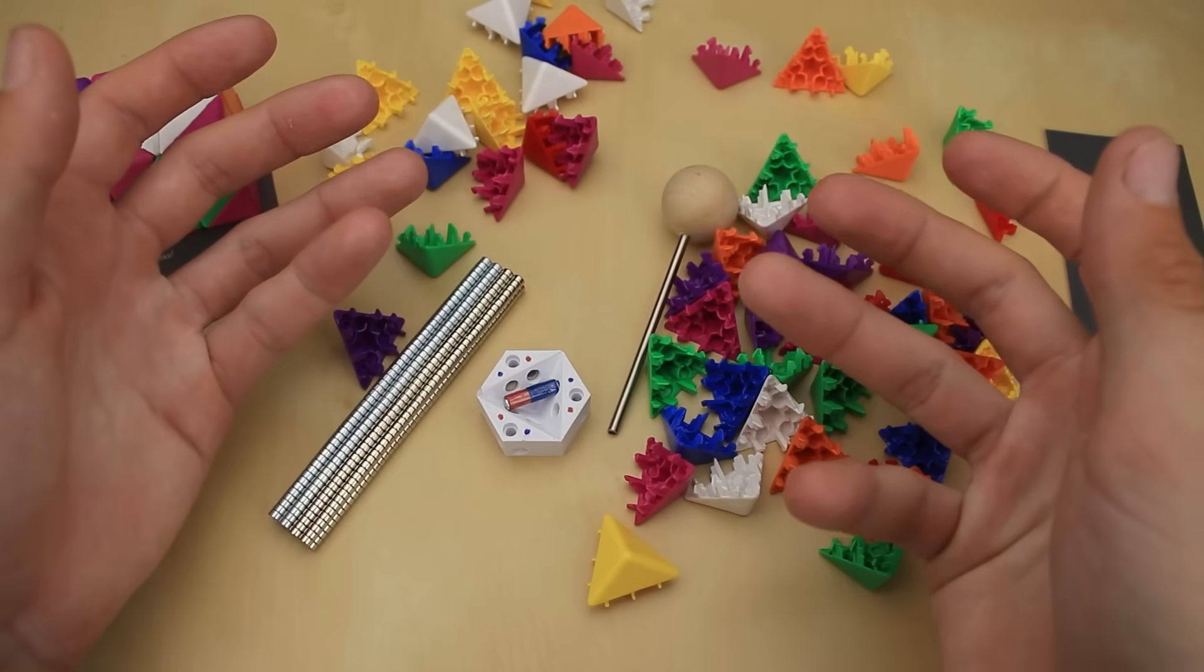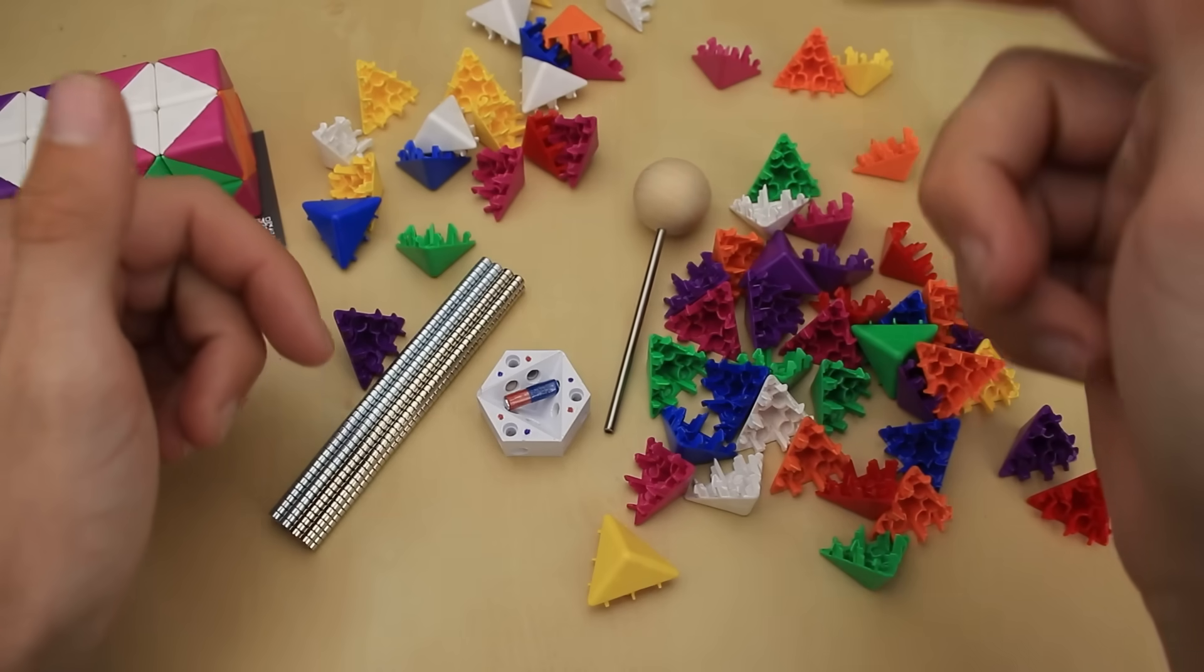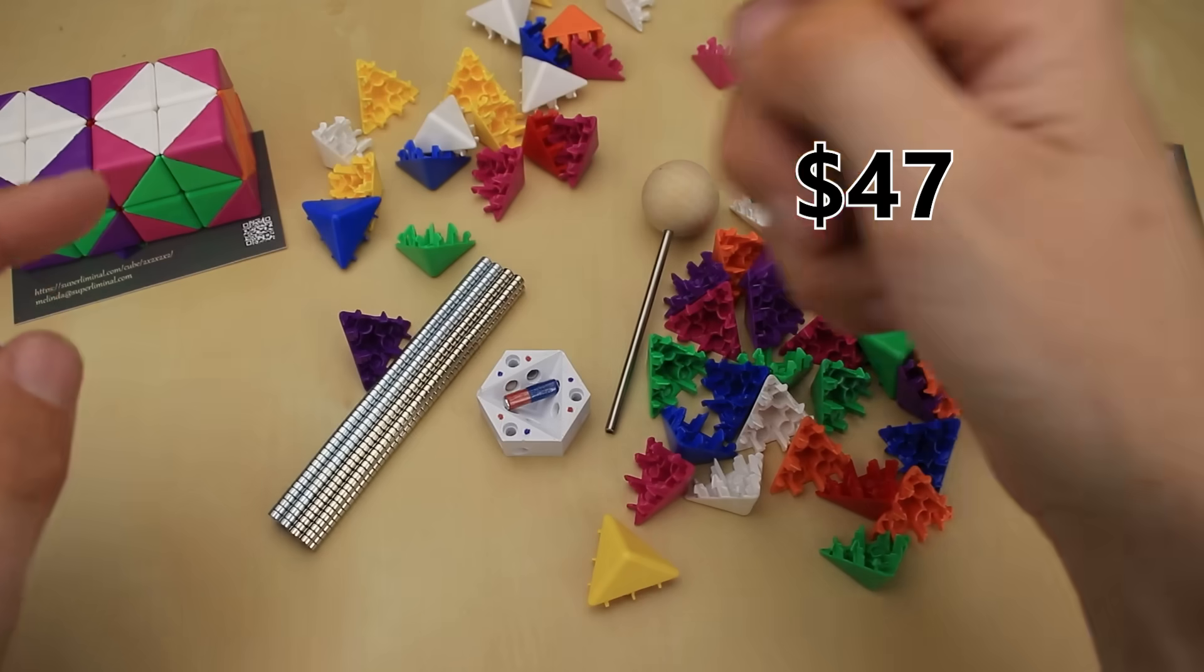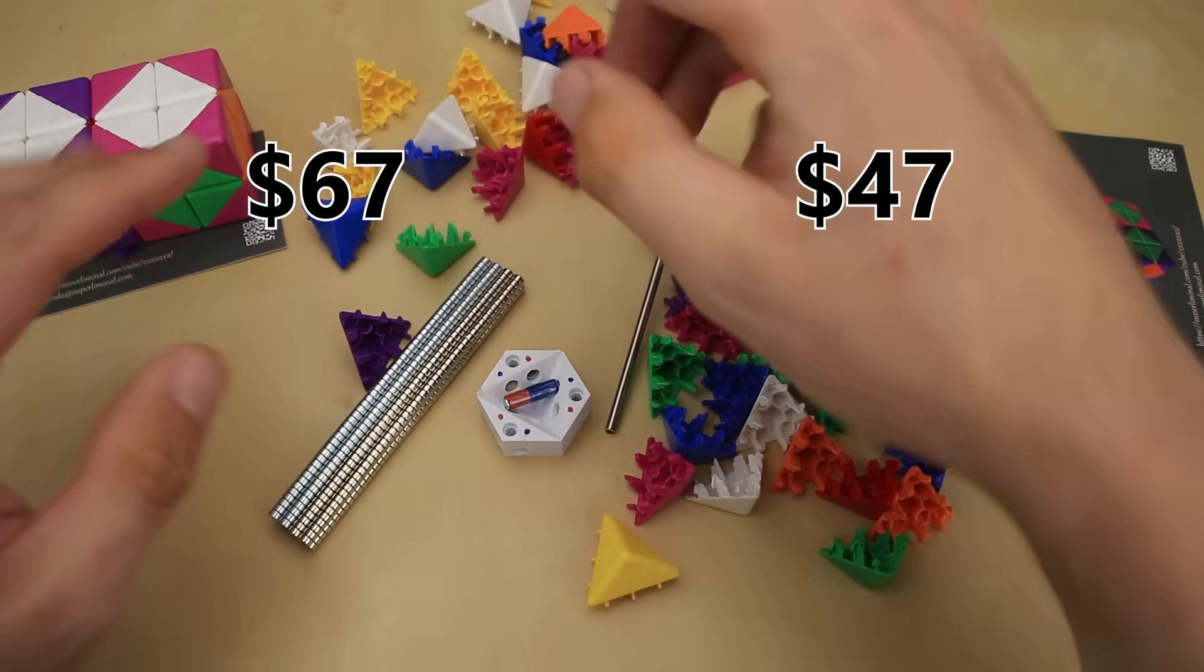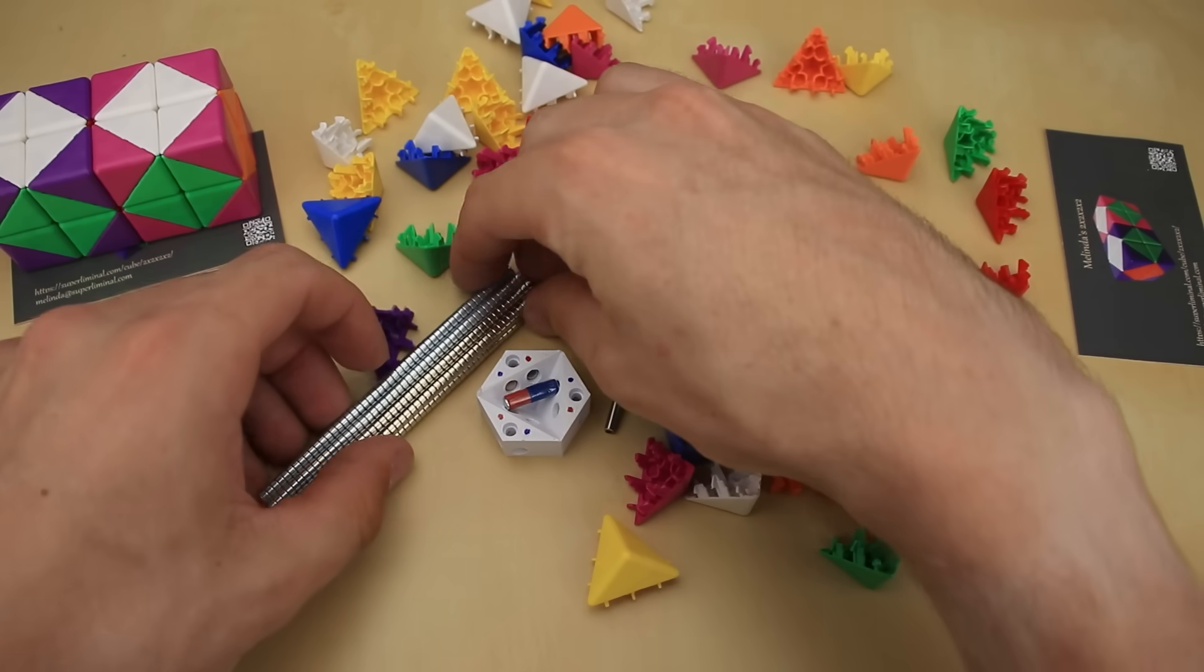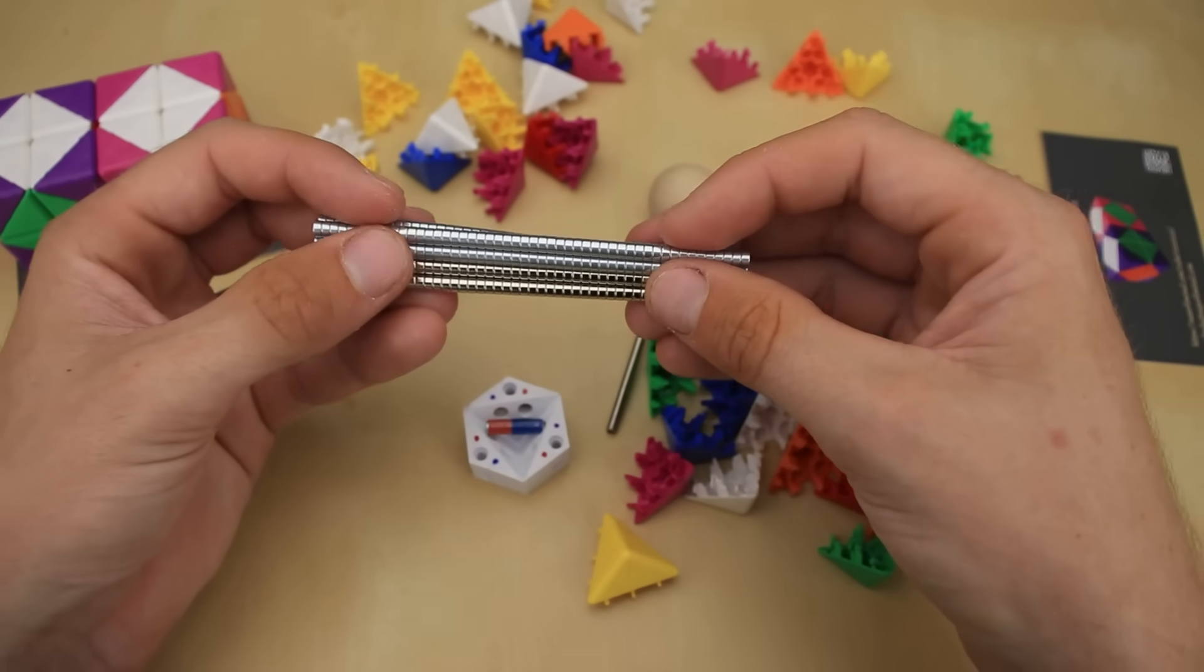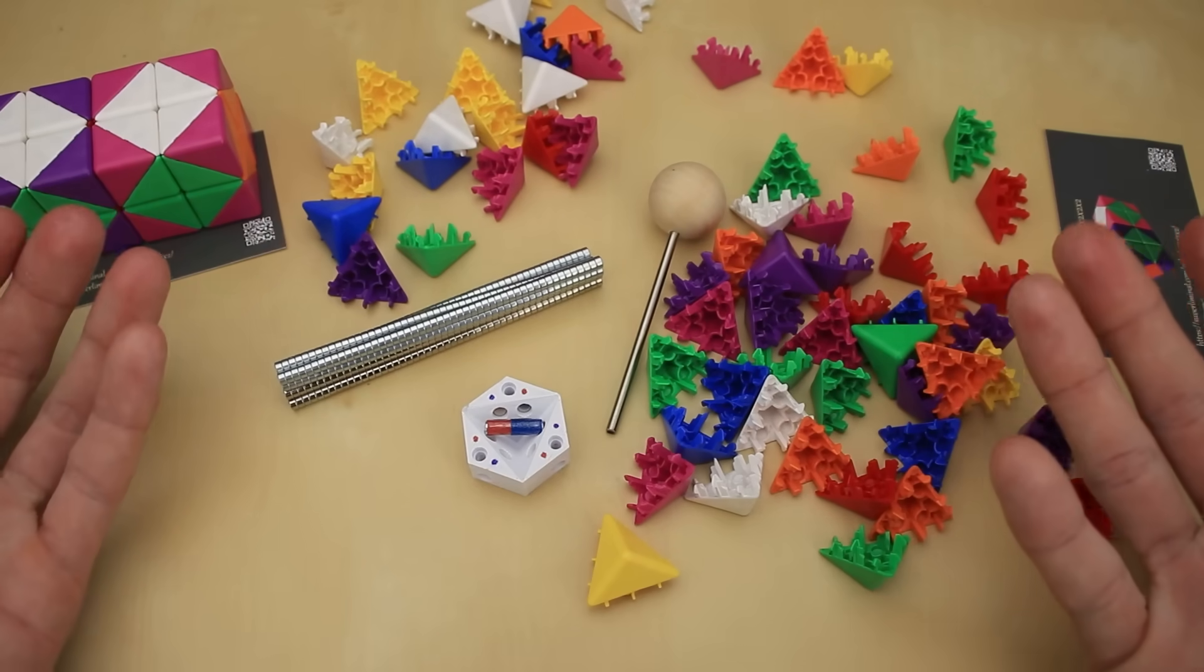And by the way, if you want to order one of these yourself, I'll put Melinda's instructions as the first link in the description below. It's $47 for the DIY kit, or $67 for the pre-assembled version, not including shipping, which frankly seems pretty reasonable given the raw materials involved and the sheer amount of work it must take for one individual to essentially create their own puzzle from scratch.